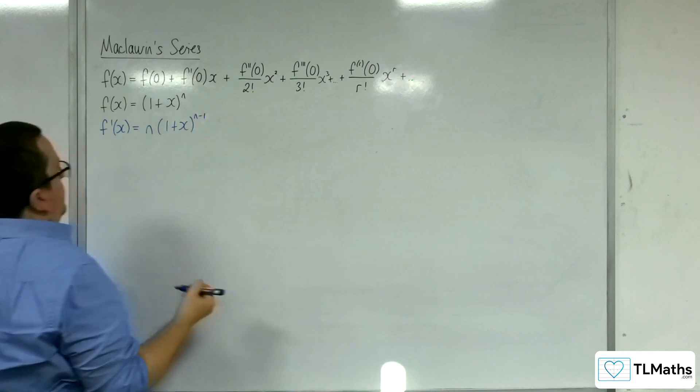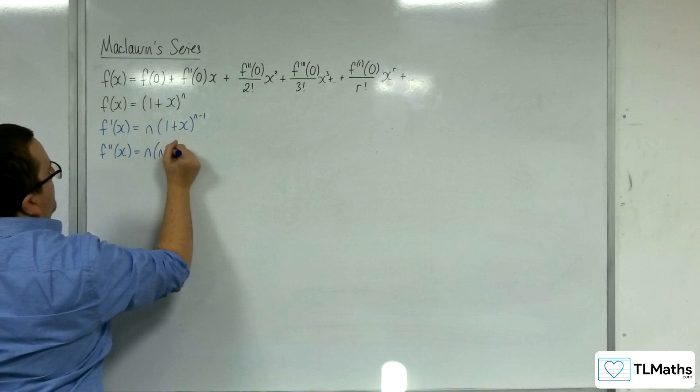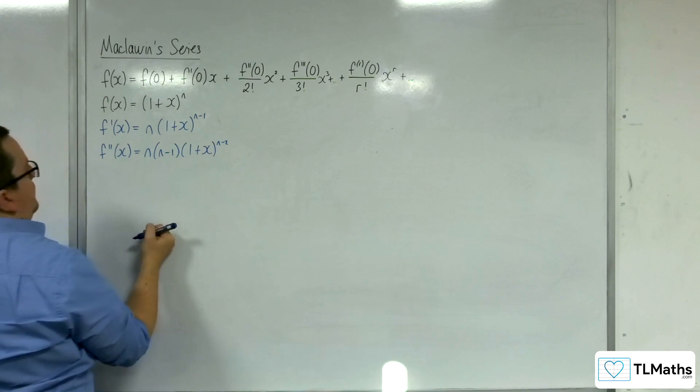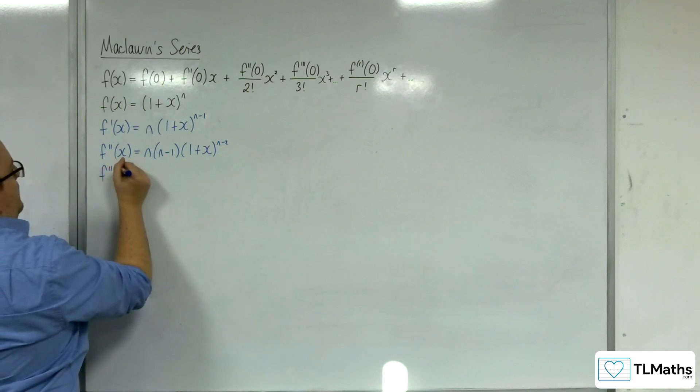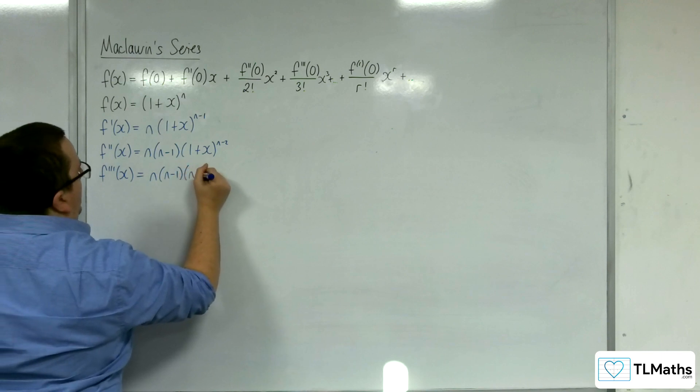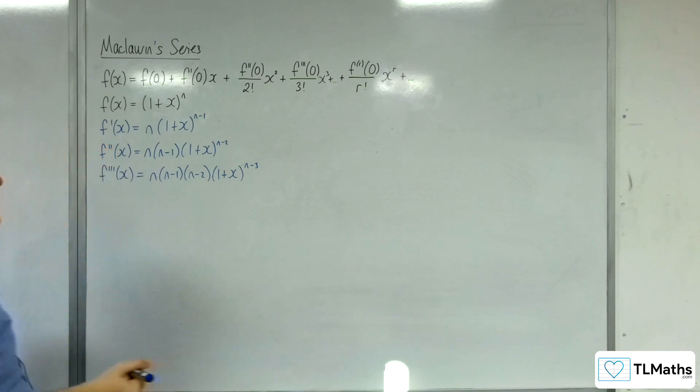That's quite straightforward. So f double prime, the second derivative, will be n times n minus 1 times 1 plus x to the n minus 2. The third derivative would be n times n minus 1 times n minus 2 times 1 plus x to the n minus 3.